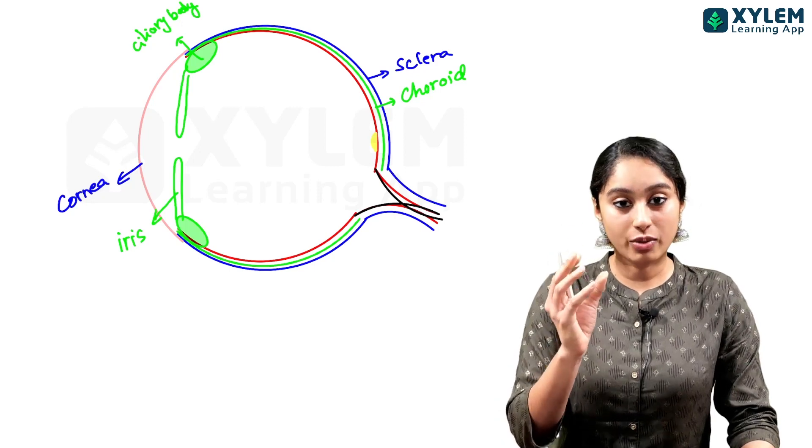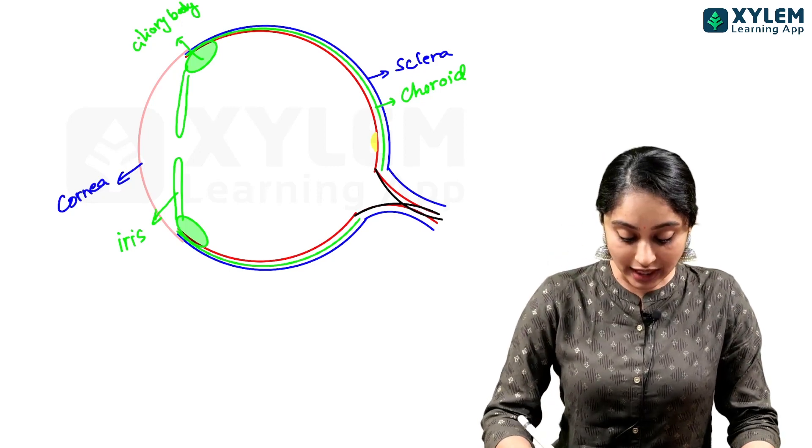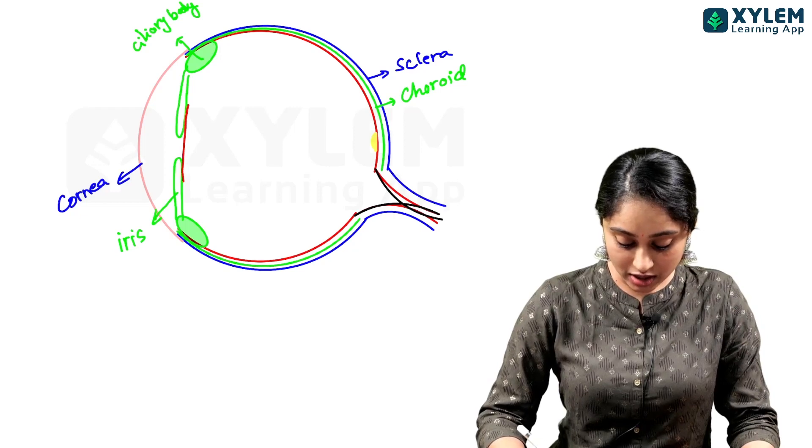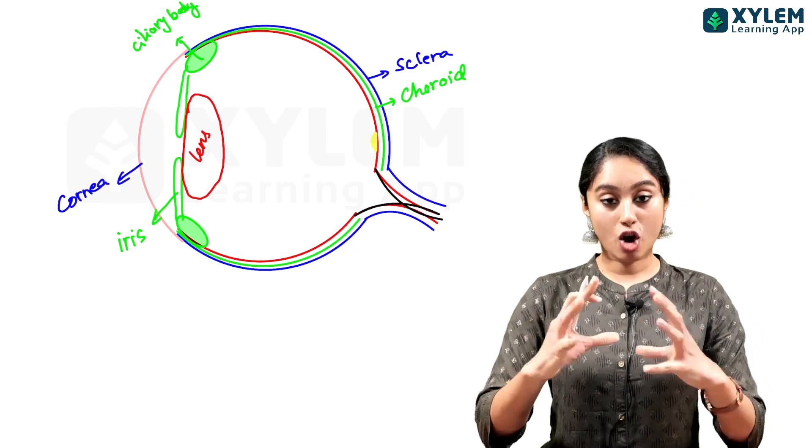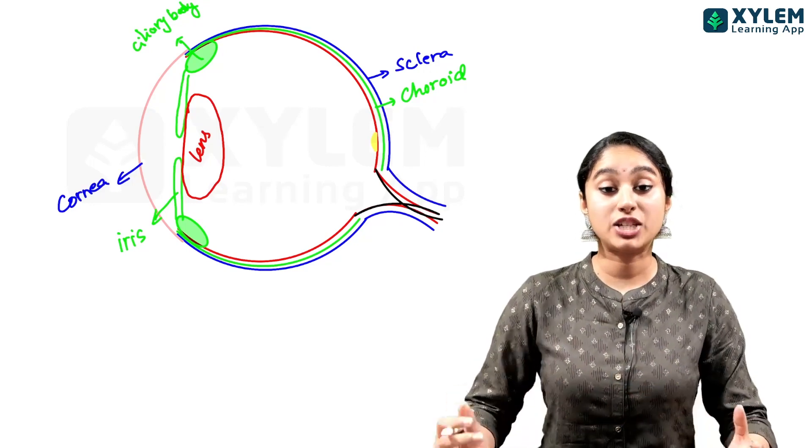That is the colored portion of our eye. And in the center, we have a lens. In the lens, the accommodation, that is the shape change.